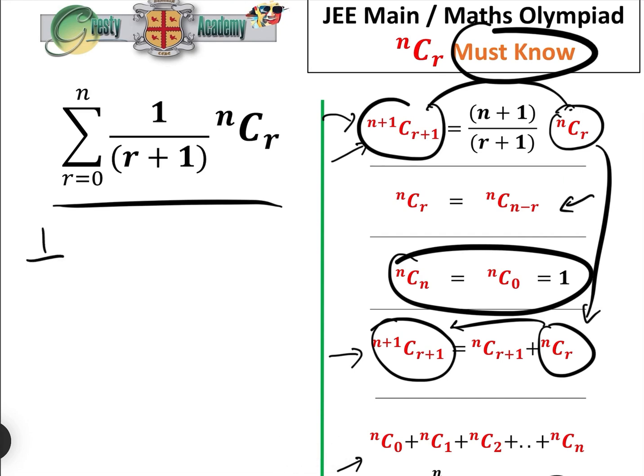Well, when r equals 0, that would be 1 over 1 nC 0, add 1 over 2 nC 1, add 1 over 3 nC 2, etc, etc.